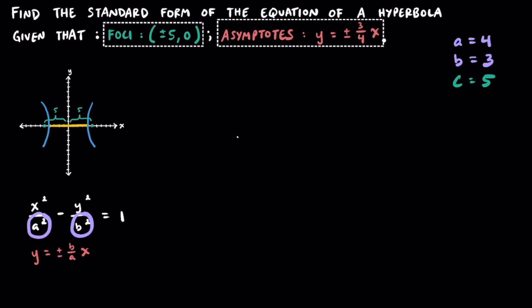So for our standard form of the equation, we're just going to write x squared over a squared. Well, a is 4. So 4 times 4 is going to be equal to 16 minus y squared over and it's b squared. B is equal to 3. So 3 squared is equal to 9. And that's going to equal 1.